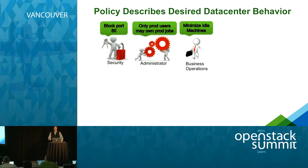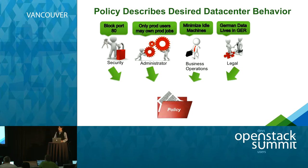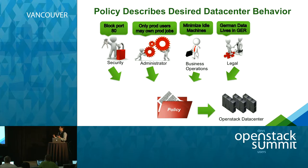Business ops might have something else — they might say they want to make sure all idle machines are shut down, or that machines aren't idling much because that's a waste of money and energy. Similarly, legal teams might have completely different types of policies, like all German data must reside within the boundaries of Germany itself. The idea behind Congress is to take all of these policies, put them in one place, and then use those policies to impose each individual's desires onto the OpenStack data center.